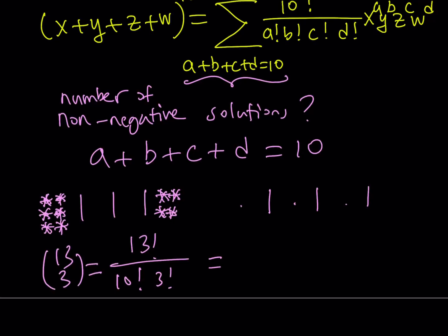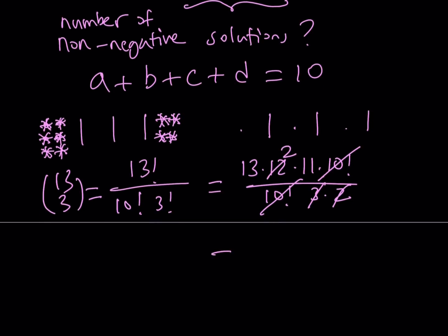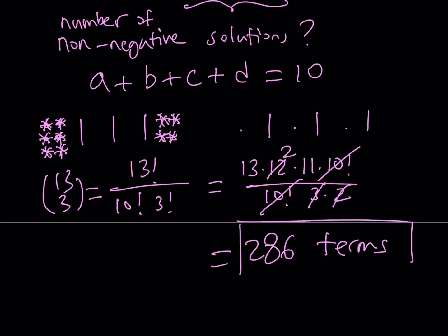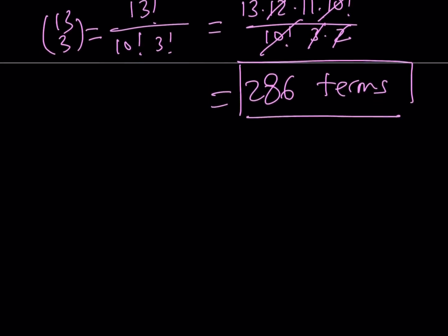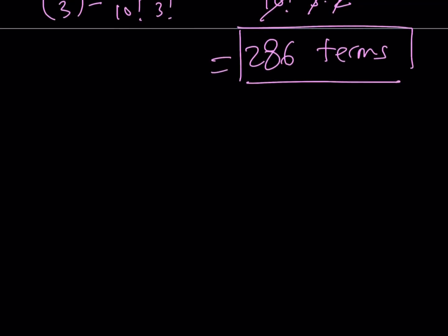Simplifying: 3 times 2 is 6, which goes into 13 times 12 times 11 to give 26 times 11, which is equal to 286 terms. This brings us to the end of the second method and to the end of this video. Thank you for watching — I hope you enjoyed it. Please comment, like, and subscribe. I'll see you tomorrow with another video. Until then, be safe, take care, and bye-bye.